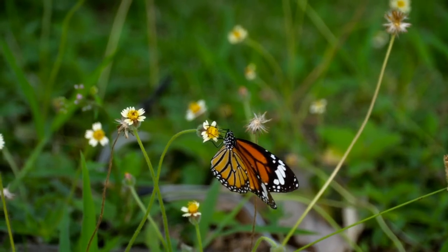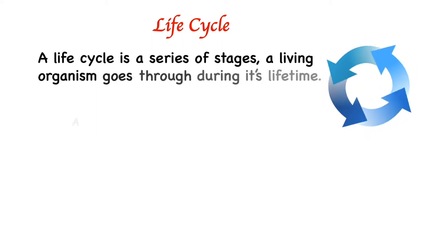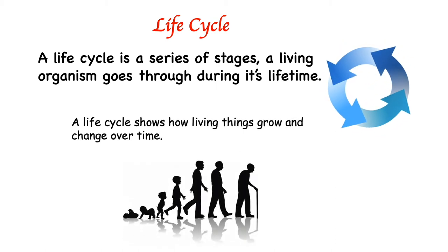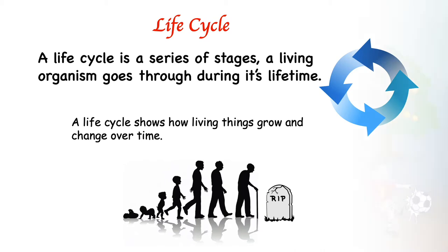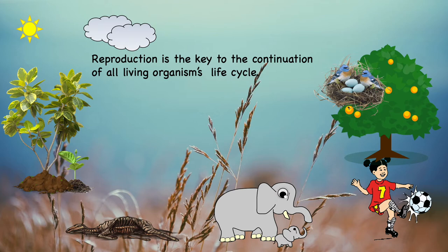A life cycle is a series of stages a living organism goes through during its lifetime. A life cycle shows how living things grow and change over time. The life cycle of an organism ends when the organism dies, but the life cycle still continues with reproduction. Reproduction is the key to the continuation of all living organisms' life cycles.